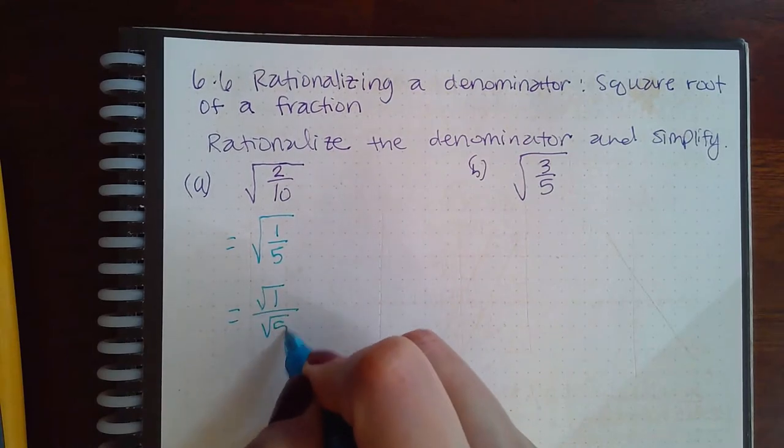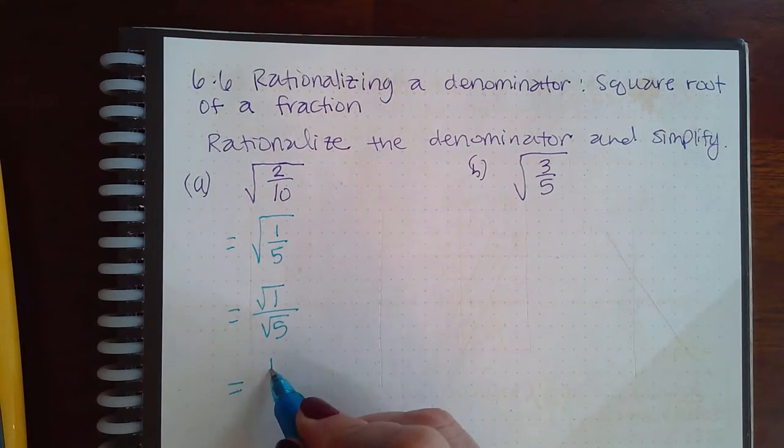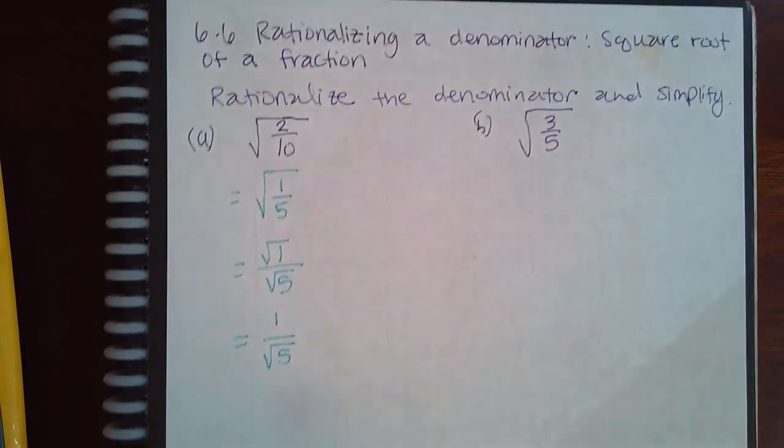Then we can do the square root of one over the square root of five. The square root of one is one, the square root of five does not simplify any further, but we still need to rationalize.